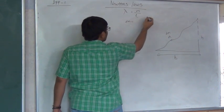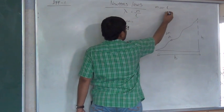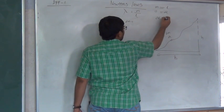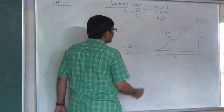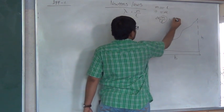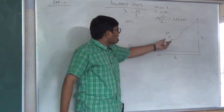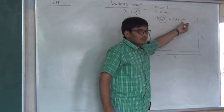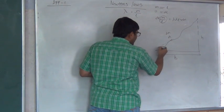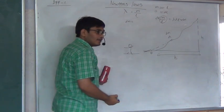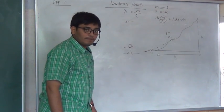dM is nothing but lambda·dL. For total length L the mass is M, so for length dL the mass will be dL times M/L, which equals lambda·dL. Now you draw a tangent here — it will subtend angle theta. You can consider this differential element as an inclined plane of angle theta with mass dM.